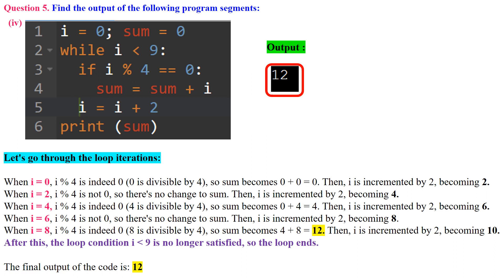Question 5, subdivision 4: In line 1, i is initialized to 0 and sum is initialized to 0. In line 2, the while loop continues as long as i < 9. In line 3, the if statement checks if i is divisible by 4 with no remainder (i mod 4 == 0). If true, i is added to sum. In line 5, i is incremented by 2. The loop repeats until i is no longer less than 9, then sum is printed.